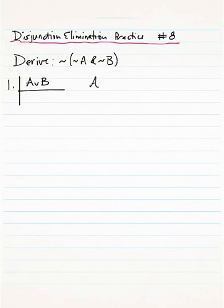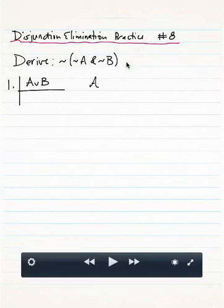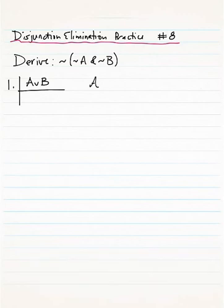This is a solution to question 8 on the disjunction elimination practice sheet. What we're trying to derive is the sentence NOT, NOT A, and NOT B, and we're trying to derive that from the one primary assumption A or B.